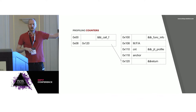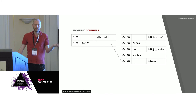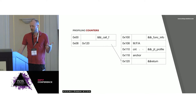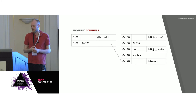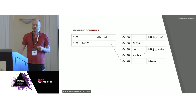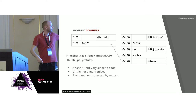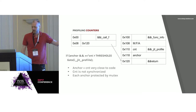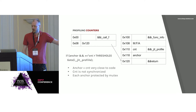The memory layout of the place we're calling looks like this: we have some metadata for the function — basically the MFA — then a counter that counts how many times this has been called, then an anchor pointer saying where trace information is stored when something is being traced, and then the actual code. In the call instructions, we don't actually dispatch into the profiling instruction but do it inline: if the anchor is not null, we increment the count, and if it's above a threshold, we start tracing.